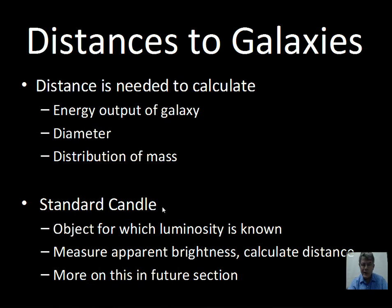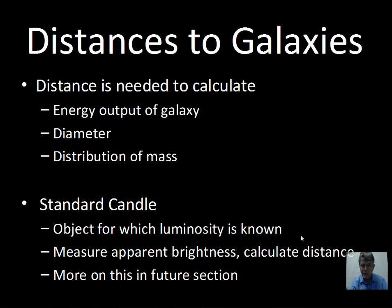Distance is very important to astronomers to understand our universe better. To find those distances we need standard candles — objects we are pretty certain of in terms of their true energy output, their luminosity. When we talk about the universe in general, we need standard candles brighter than Cepheid stars, which are good for inside our galaxy and not too far away. That's going to be provided by the Type 1a supernova, which we'll talk about in future videos.